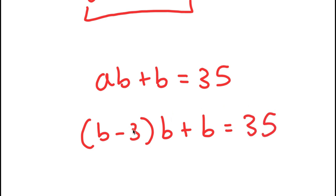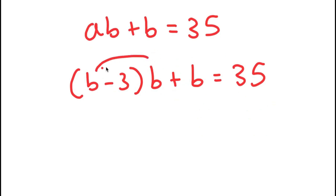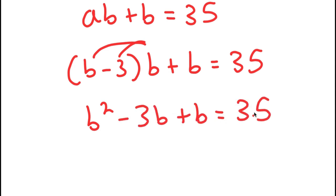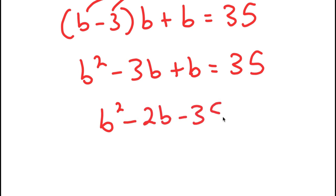Now my only variable in this equation is B. I'll distribute the B: B times B is B squared, and B times negative three is negative three B. Adding the remaining B gives B squared minus three B plus B equals 35. Since negative three B plus B equals negative two B, and subtracting 35 from both sides, I get B squared minus two B minus 35 equals zero.